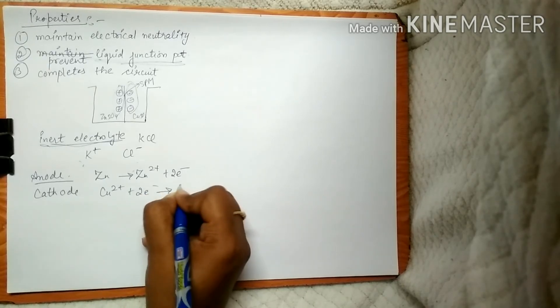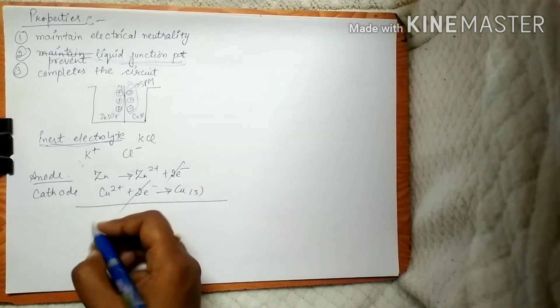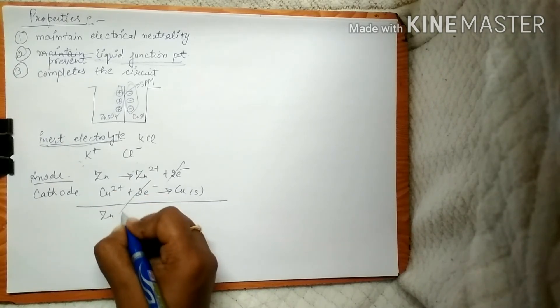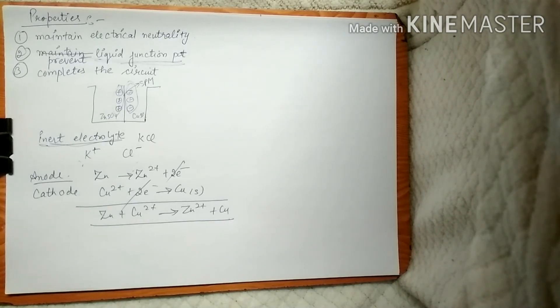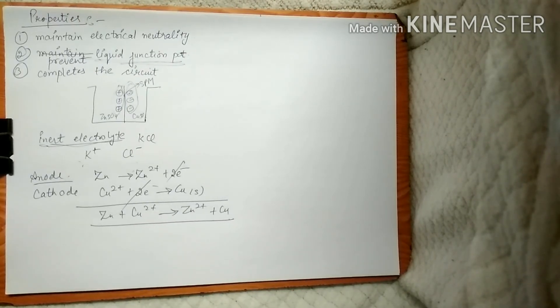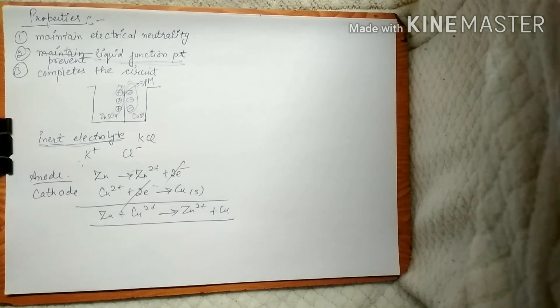The reactions in the Daniel cell: at the anode, Zn → Zn²⁺ + 2e⁻; at the cathode, Cu²⁺ + 2e⁻ → Cu (solid). The net cell reaction, cancelling the two electrons, is: Zn + Cu²⁺ → Zn²⁺ + Cu. That's it for this video. From the next video we'll cover Faraday's laws, conductance, and various formulas derived from conductance. Thank you so much for watching.